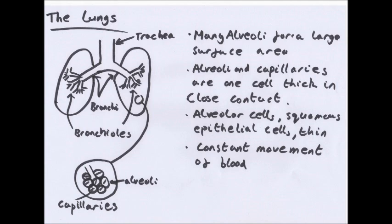The alveoli provide a large surface area. The alveoli and capillaries are one cell thick and right next to each other. The alveoli contain squamous epithelium, which is a very thin cell — it's one cell thick — and right next to that you have a capillary running along it. Oxygen diffuses from the inside of the alveoli across essentially a two-cell-thick wall — one cell on the alveoli, one on the capillary — and into the blood. That's a very short distance, giving both a large surface area and a short diffusion path.